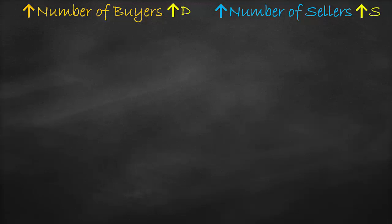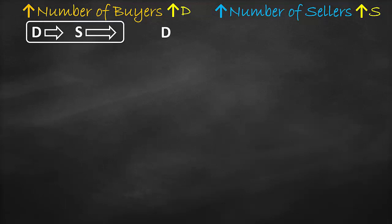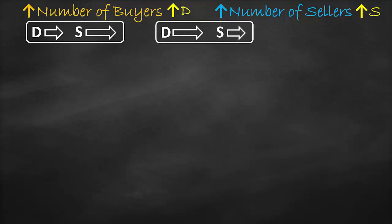Since both supply and demand will shift at the same time, we have three scenarios. The first scenario is supply will have a bigger shift compared to demand. The second scenario is demand will have a bigger shift compared to supply. The third scenario is both supply and demand have an equal shift.